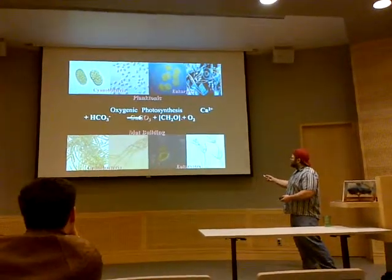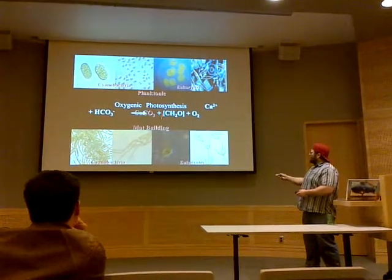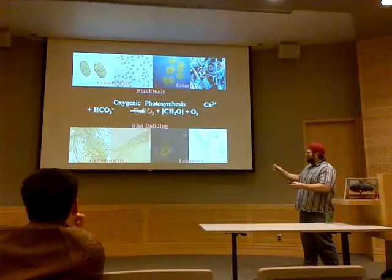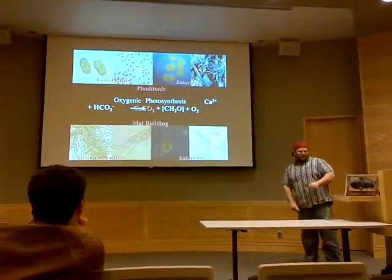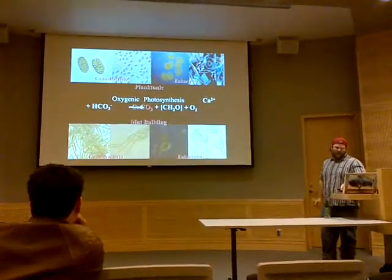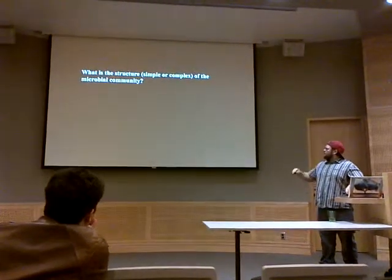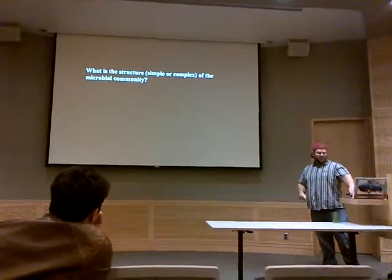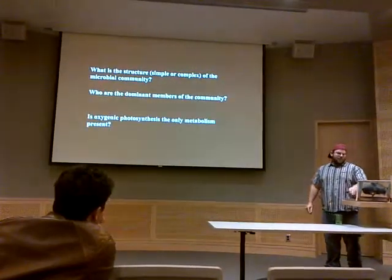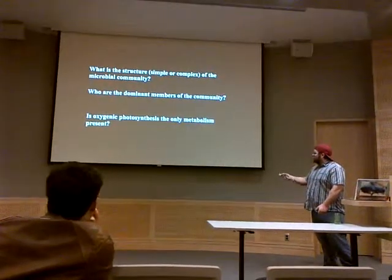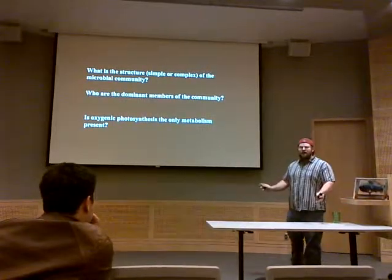Basically, oxygenic photosynthesis increases the alkalinity, which leads to the formation of calcite, and that makes the microbialite. So the first questions I had were: is the structure of the microbial community complex or simple? Who are the dominant members of this community? And is oxygenic photosynthesis the only metabolism present? Because everyone says it's all cyanobacteria — that's all you need.